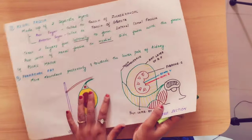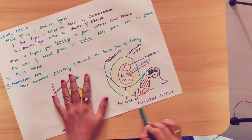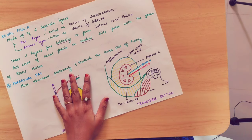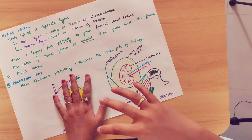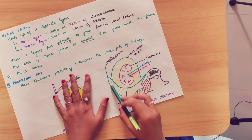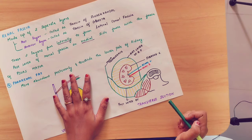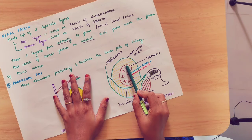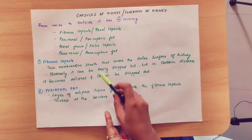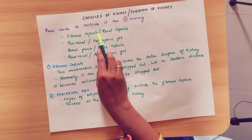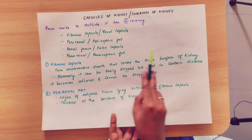You have to know this diagram. In the diagram, it is a transverse section — a cut from superior. You can see four layers, four coverings: fibrous capsule, perirenal fat, renal fascia, and pararenal fat.